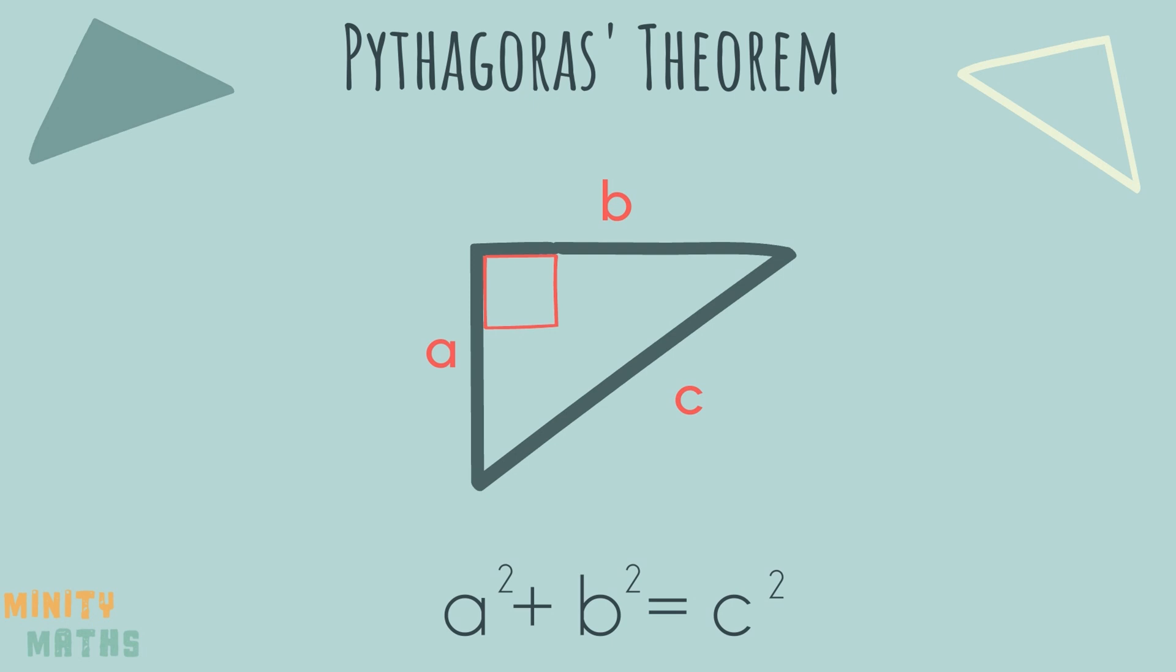It doesn't matter which side you label as a and b, as long as it is not the hypotenuse. We always label the hypotenuse, the longest side, as c.